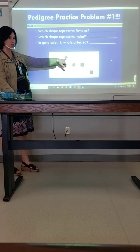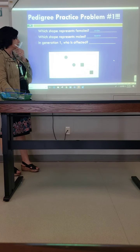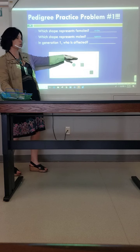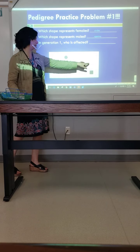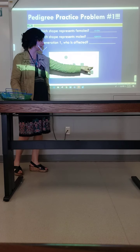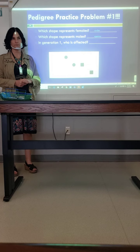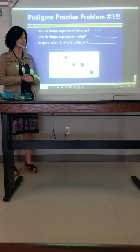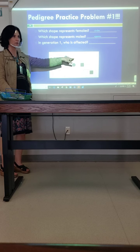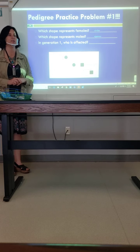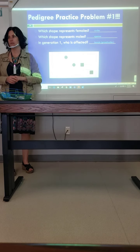Females are going to be our circles and males are going to be our squares. Here we have, like, the grandma and grandpa generation. Then they have four kids. This kid is married to this lady, and they ended up having two children. In Generation 1, it is the grandmother — the female — who has the affected trait, because she has the shaded-in shape.